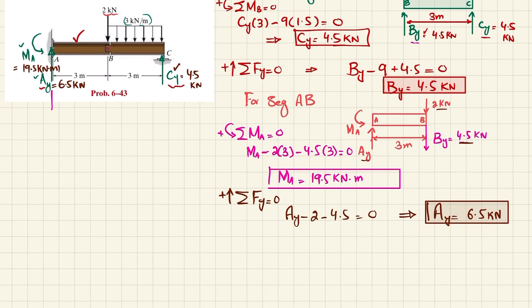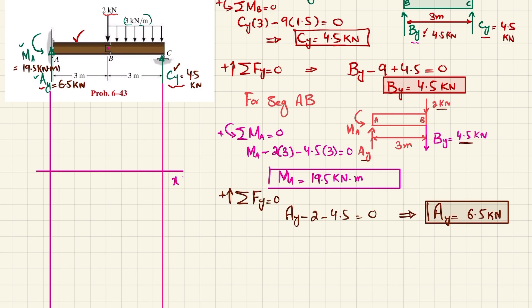To draw the diagrams, I take vertical lines from the ends of the beam. First we draw the shear force diagram. The horizontal axis is in meters, and the vertical axis is shear force in kN, with each division equal to 5 kN. At point A we have 6.5 kN, so the first point is at 6.5 kN.